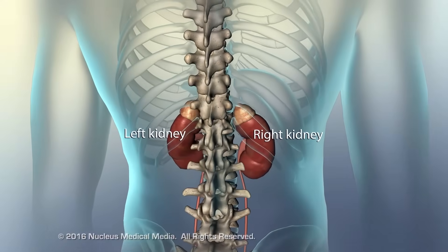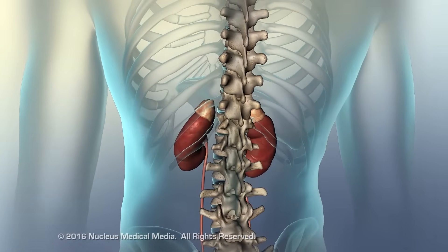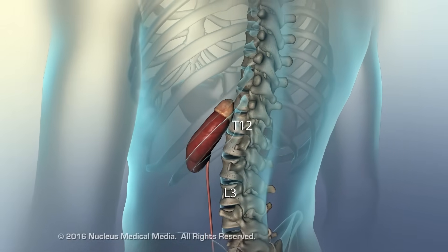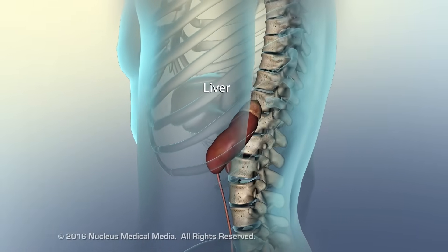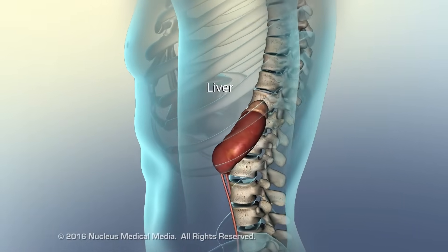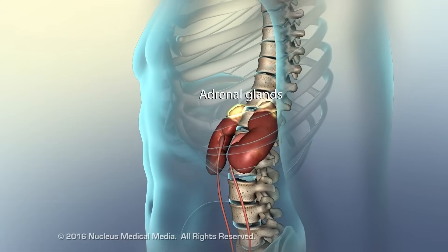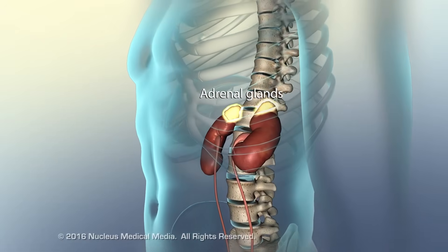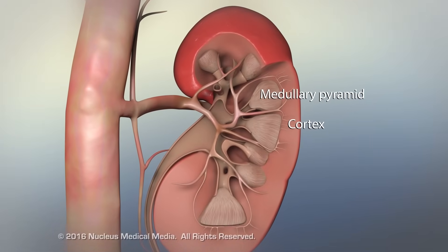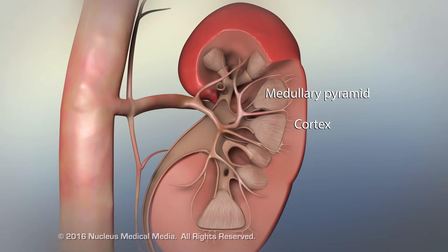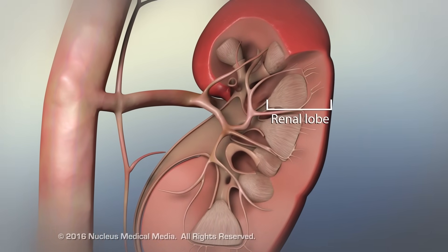The kidneys are located on either side of the spinal column in the posterior abdominal wall. Adrenal glands sit on top of the kidney. The medullary pyramid and outer cortex compose the renal lobe.